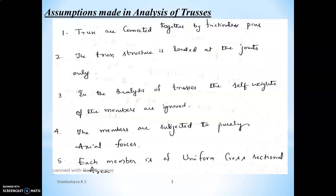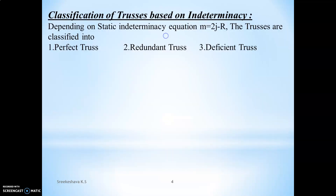The last assumption is that each member has a uniform cross-sectional area. Only prismatic truss members are considered, which means varying cross-sectional area is not allowed in the analysis of trusses. These are the basic and very important assumptions made in the analysis of trusses.